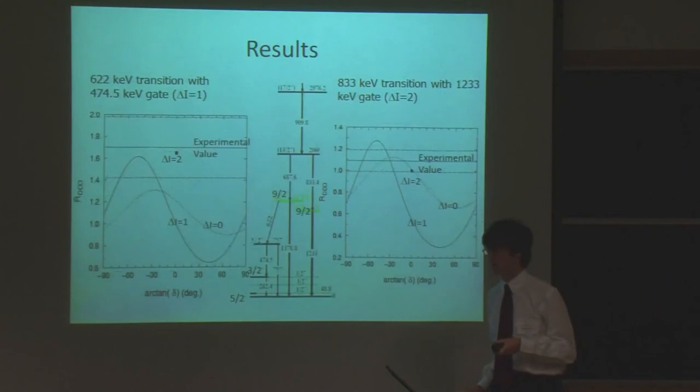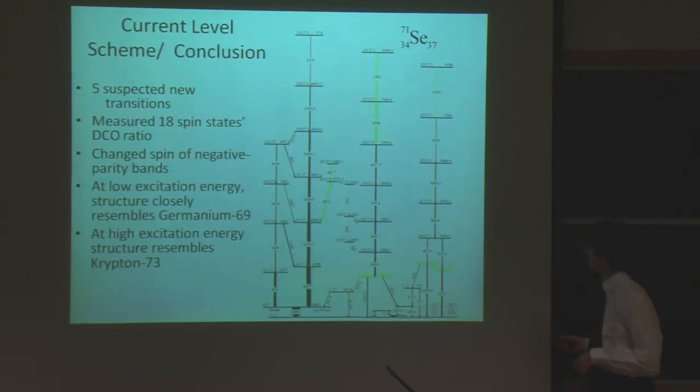But as we saw in Selenium-73, the parity bands started on opposite numbers. So if we're going to change this from 5 halves to 7 halves, we have to have this one start at 9 halves or 5 halves. So we wanted to see if that would work. And it actually fits the data better than the other assignment, because the 622 transition looks like it's a quadrupole transition, and these bottom energy levels have been firmly established by many different publications. Also, Germanium-69 shows these two 9 halves minus states as well.